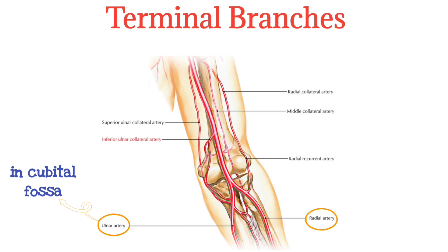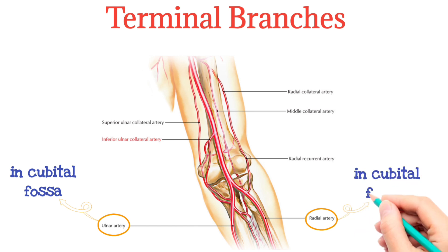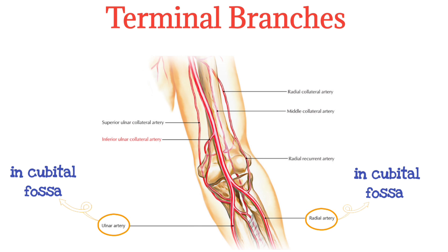The radial artery originates in the cubital fossa, along with the ulnar artery, at the bifurcation of the brachial artery. It courses under the brachioradialis muscle, running laterally to the flexor carpi radialis muscle. This course serves as the linear boundary between the flexor and extensor compartments of the forearm.